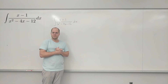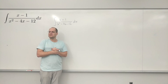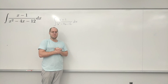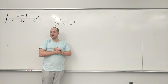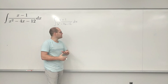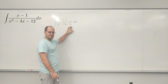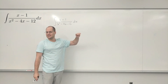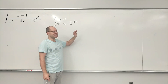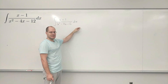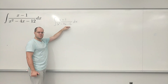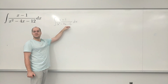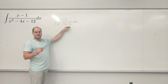Step 1: factor the denominator. You might immediately ask, what do I do if I can't factor the denominator — if it's not factorable? Then you'll end up with an arctan. We'll see that later. This denominator is easily factorable.